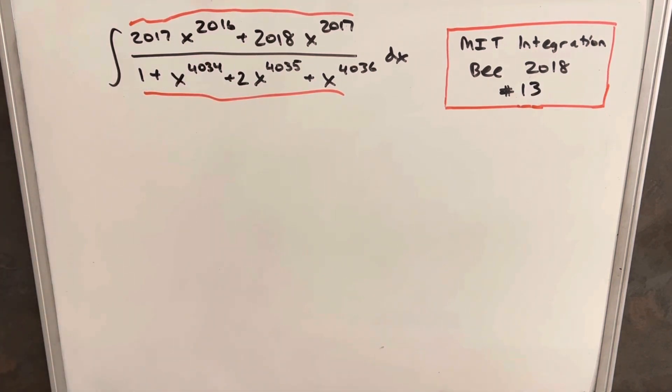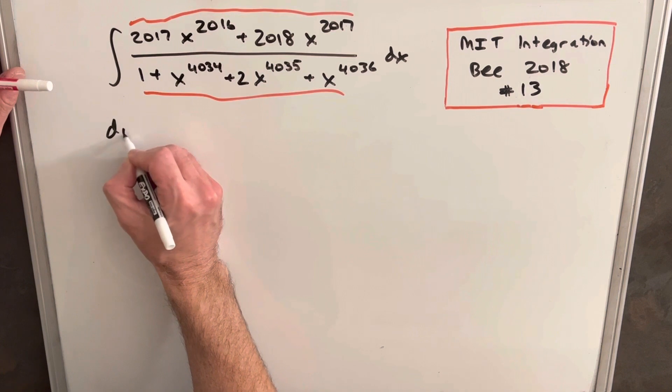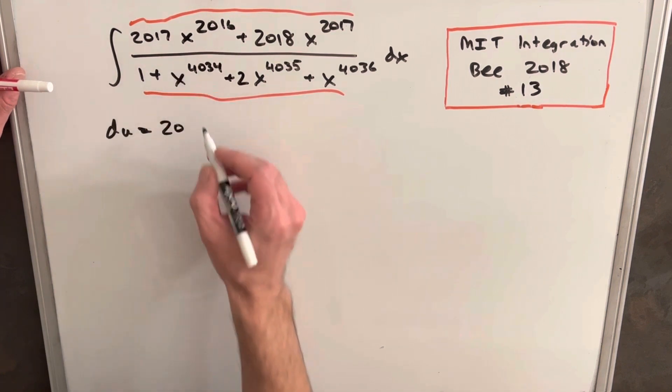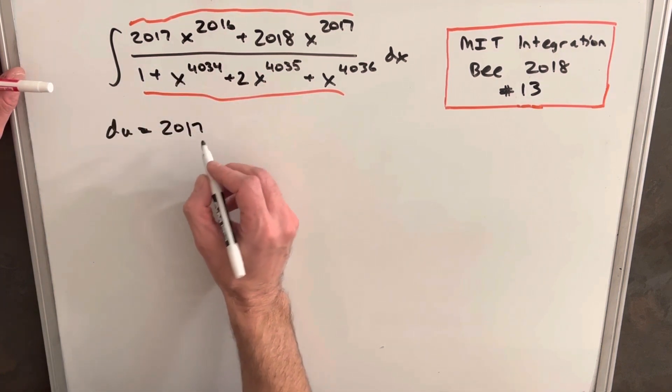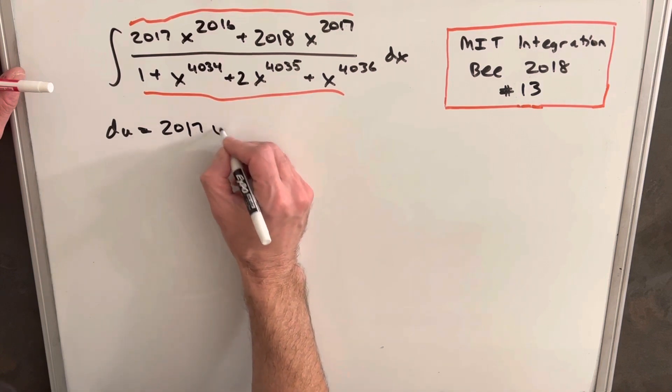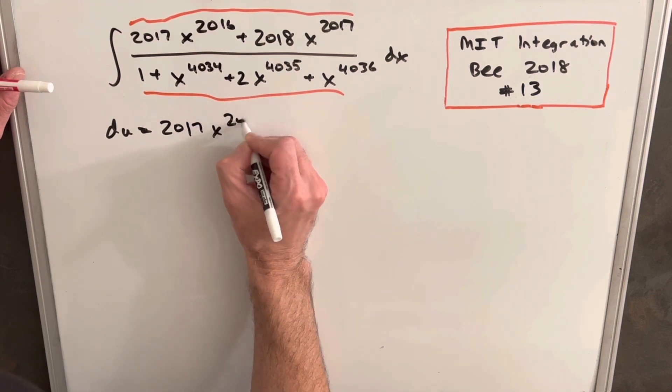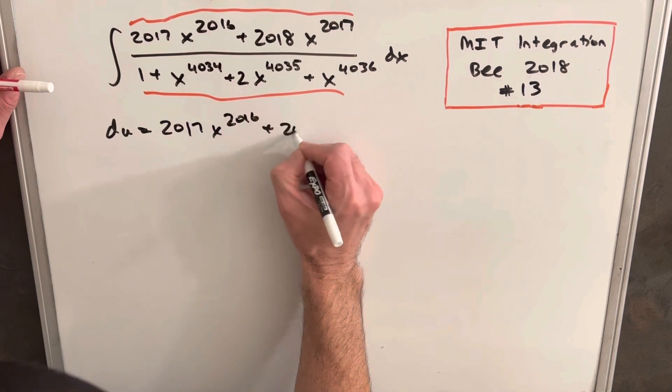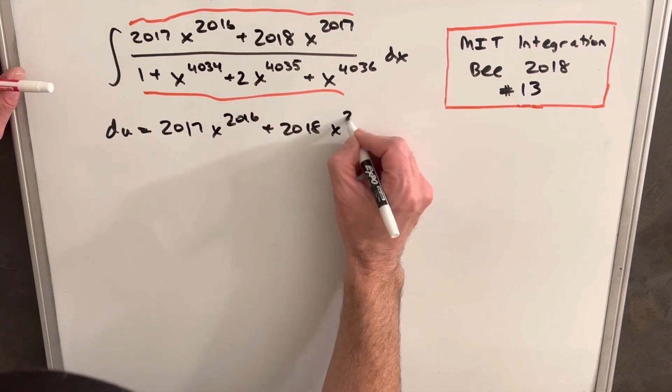So typically when we do a u substitution we want to declare our u first. In this case I'm going to kind of do the opposite and I want to declare my du to be that numerator. So the du is going to be 2017 x to the 2016 plus 2018 x to the 2017.